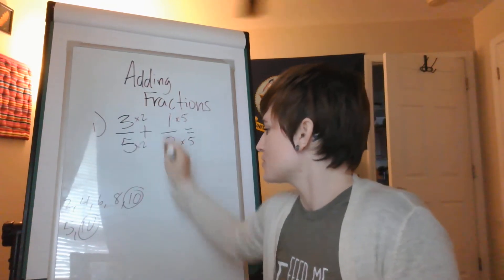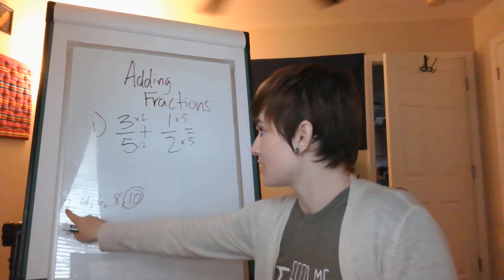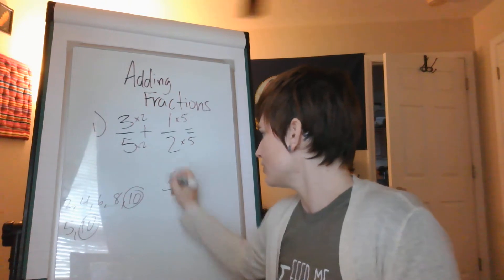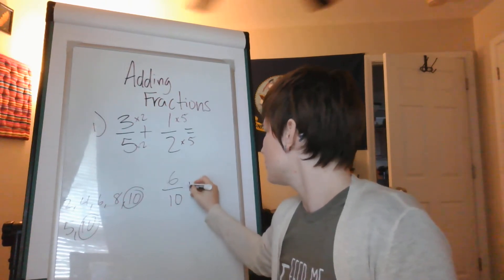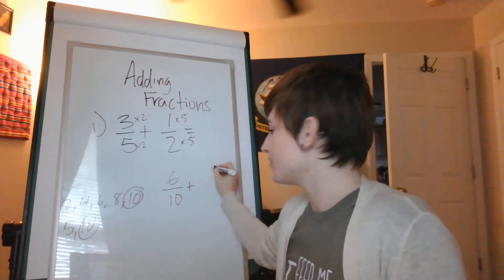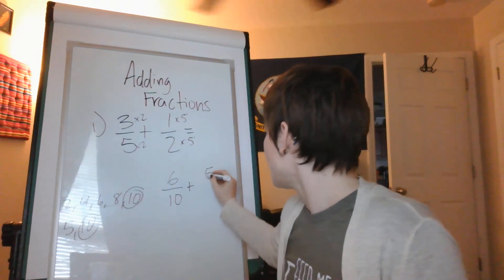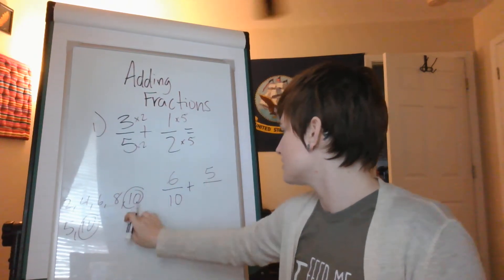So let's multiply three times two, which is one, two, three, six, over ten, plus one times five. One times a number is the number, five, and two times five is ten.